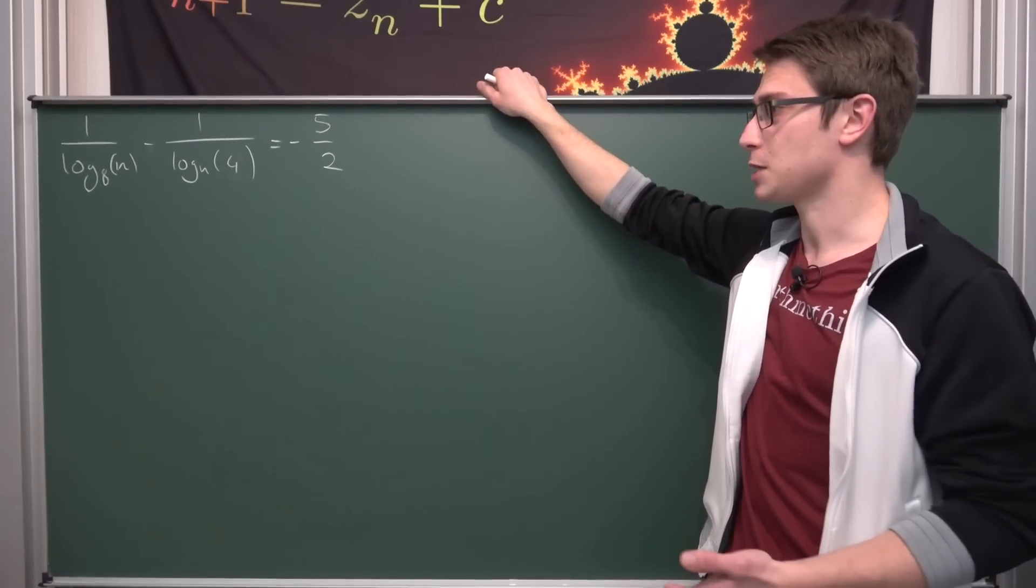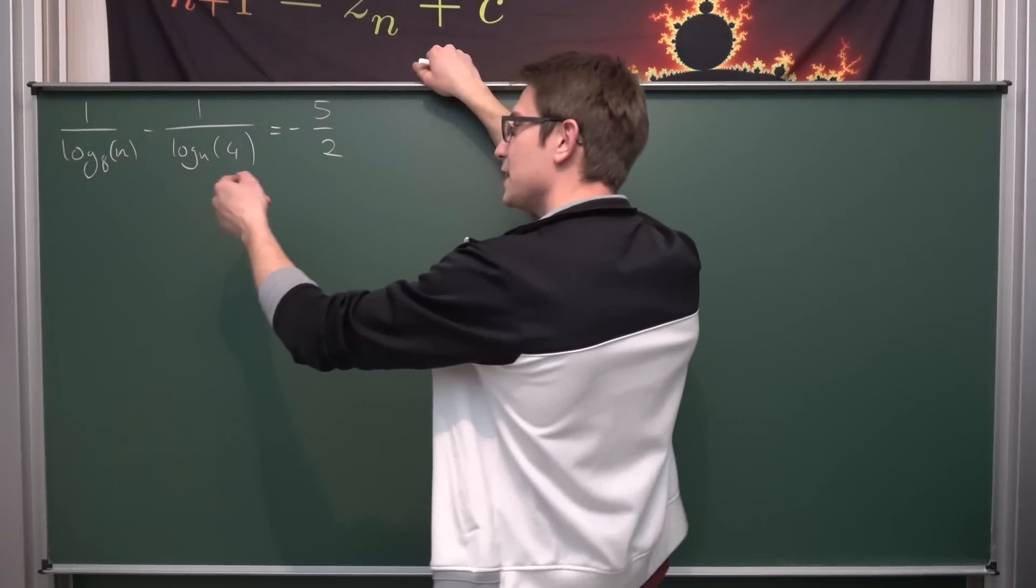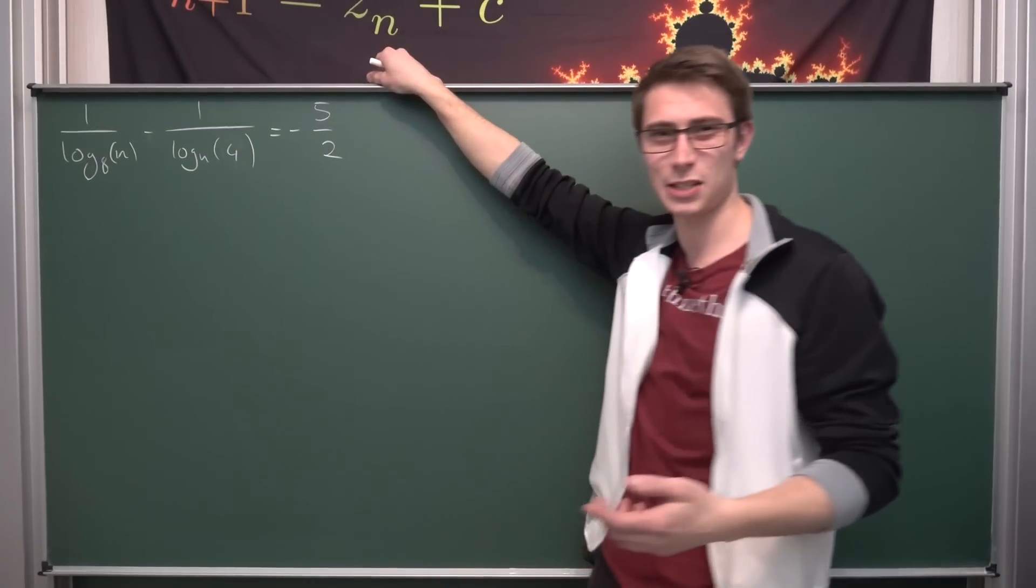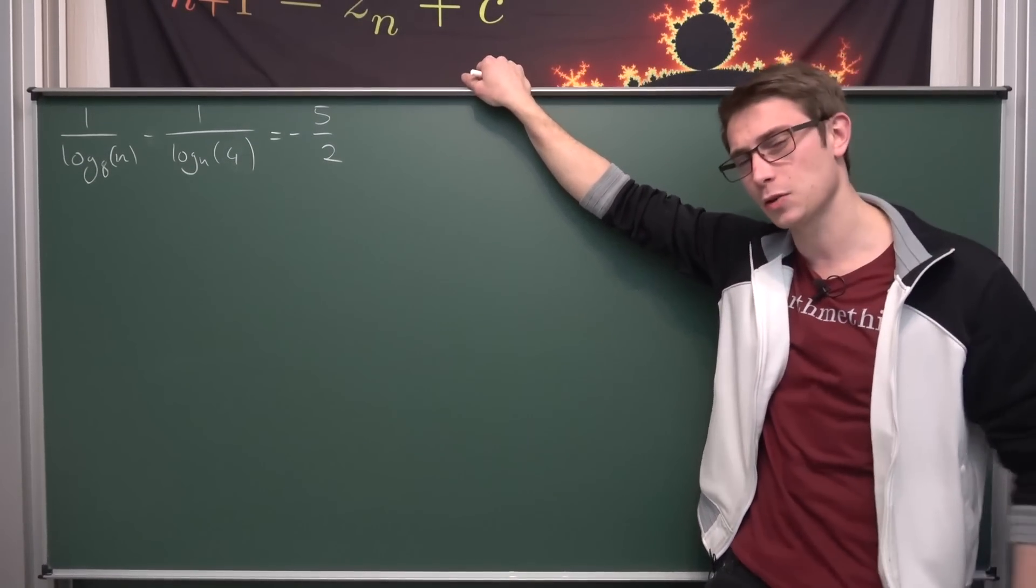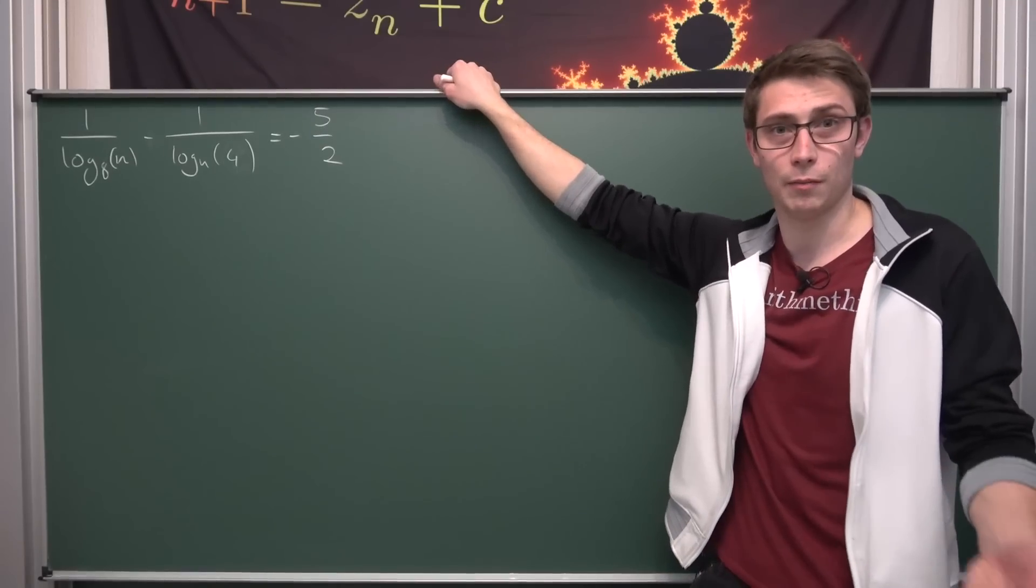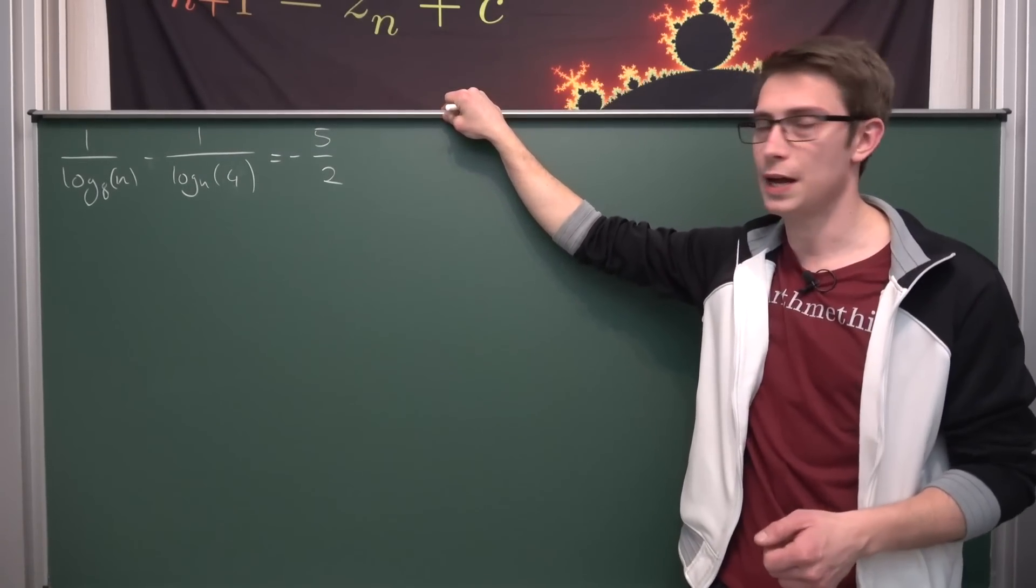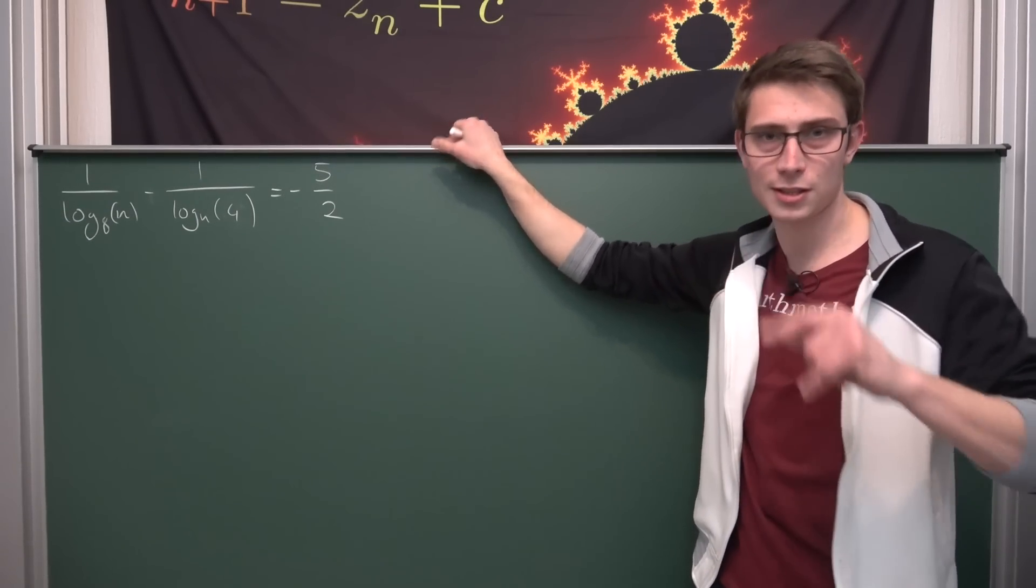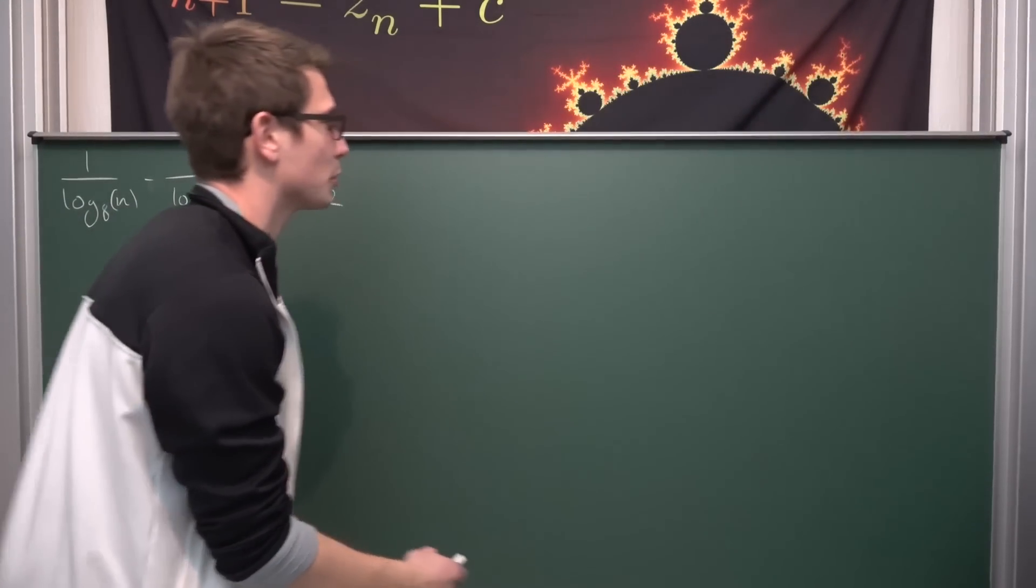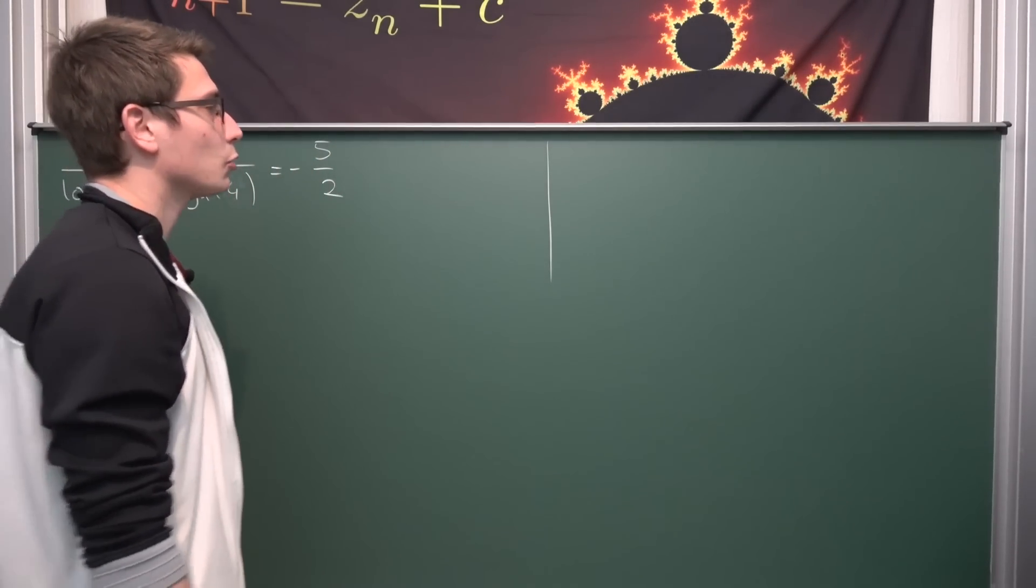And now we are going to do a change of base because here we have the logarithm of n, and here we have the logarithm base n. So we want to put this in terms of a natural logarithm for example, and then start using the exponential function on both sides to solve for our n. No matter what it is we want to do later, at first, let's do a change of base. I'm going to explain to you what the change of base is. It's a very nice identity on logarithms.